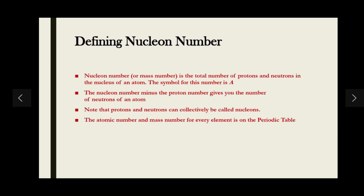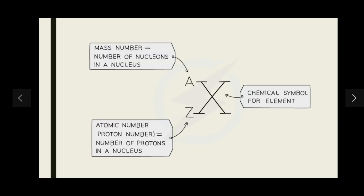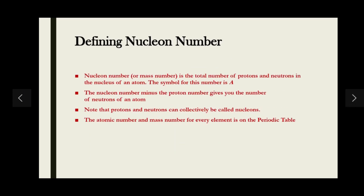The mass number minus the proton number gives you the number of neutrons in an atom. So if you know both the proton number and the mass number, you can calculate the number of neutrons. Protons and neutrons together are called nucleons. Both the atomic number and mass number for every element are listed on the periodic table — the mass number is the larger number and the atomic number is the smaller one.